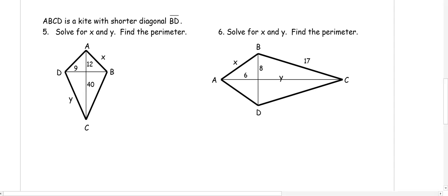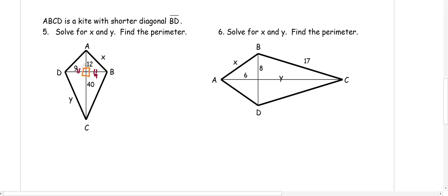ABCD is a kite with shorter diagonal BD. Solve for X and Y and find the perimeter. BD is the shorter diagonal, so it is bisected — both pieces are 9. The diagonals are perpendicular, so we have four right triangles. To solve for X, since X is the hypotenuse: X² = 12² + 9² = 144 + 81 = 225. Taking the square root, X = 15. Since consecutive congruent sides are next to each other, AD is also 15.